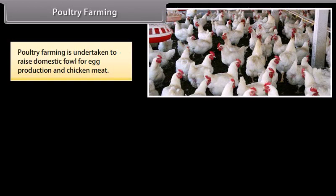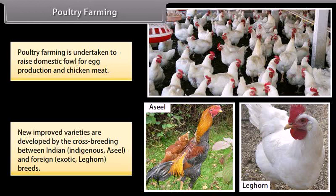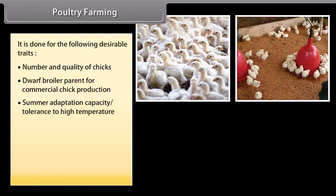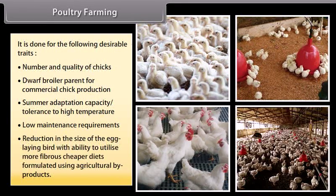Poultry farming is undertaken to raise domestic fowl for egg production and chicken meat. New improved varieties are developed by cross-breeding between Indian indigenous Aseel and foreign exotic Leghorn breeds. This is done for desirable traits such as number and quality of chicks, dwarf broiler parent for commercial chick production, summer adaptation capacity, tolerance to high temperature, low maintenance requirements, and reduction in the size of egg-laying birds with ability to utilize more fibrous, cheaper diets formulated using agricultural by-products.